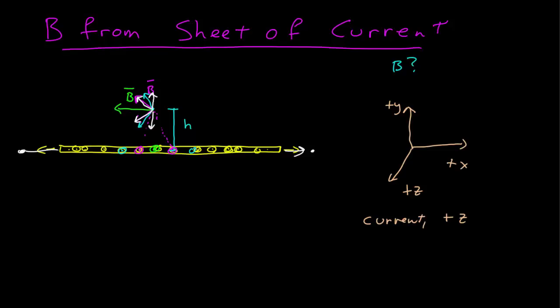We're only left with a magnetic field pointing in the negative x direction. This is the kind of reasoning by symmetry that you want to apply often in physics problems to simplify what you have to work with, and it largely comes from drawing lots of pictures and spending time with them.